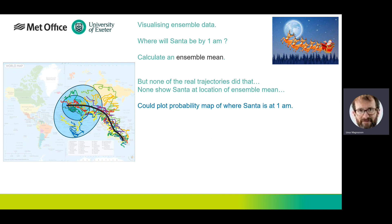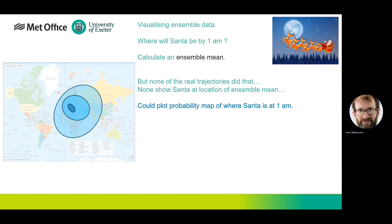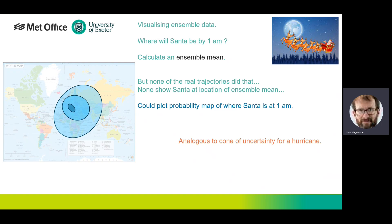Are there better ways of depicting this more informatively? One thing we could do is plot a probability map of where Santa is at 1 a.m. — contours of equal probability over all the possible places where those trajectories end. Rather than eight ensemble members, you might do 20, 50, or 100. This is the same as the cone of uncertainty: rather than showing all the hurricane tracks through the Gulf of Mexico, you show a cone with shading — going from yellow to red toward the centre — representing the probability of the hurricane centre passing within a certain distance of that point.